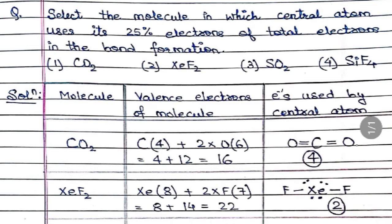Hi students, welcome back. This is a good question from chemical bonding. The question is: select the molecule in which the central atom uses its 25 percent electrons of total electrons in the bond formation. The options given are: